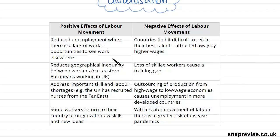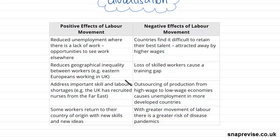The positive effects include reduced unemployment: where there is a lack of work, people can move elsewhere and find opportunities due to globalisation. It also reduces geographical inequality between workers. For example, Eastern Europeans have often moved to the UK to work there — builders and workmen from Eastern Europe where there isn't a big building market have moved to the UK to fill jobs in its booming building sector, almost like helping each other out.